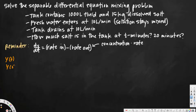The question asks for y(t) and also y(20). Whenever you do a mixing problem, you have to familiarize yourself with the equation: dy/dt equals rate in minus rate out. Here dy/dt is the change in amount, and rate in and rate out are calculated using concentration times flow rate. The initial amount is given — initially we have 15 kilograms, so y(0) = 15 kg.